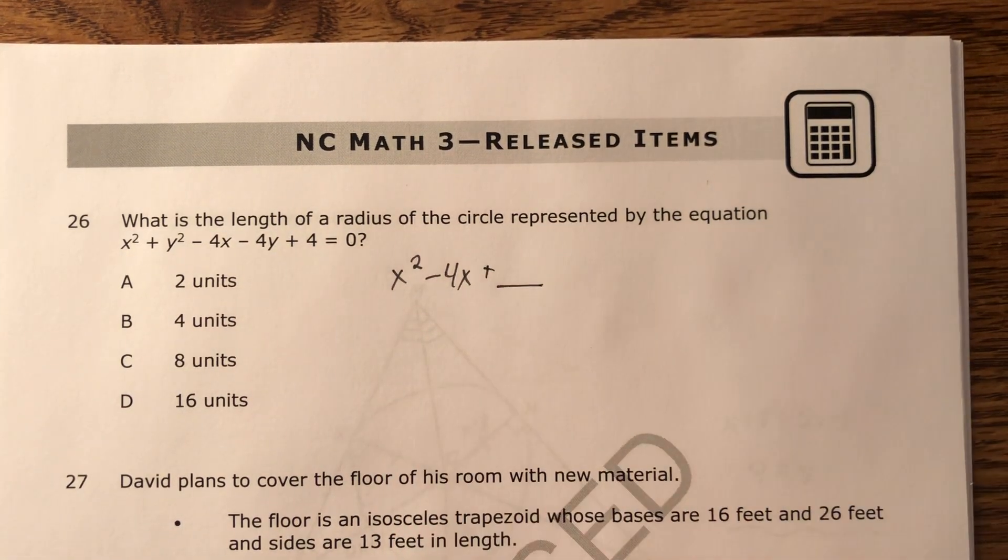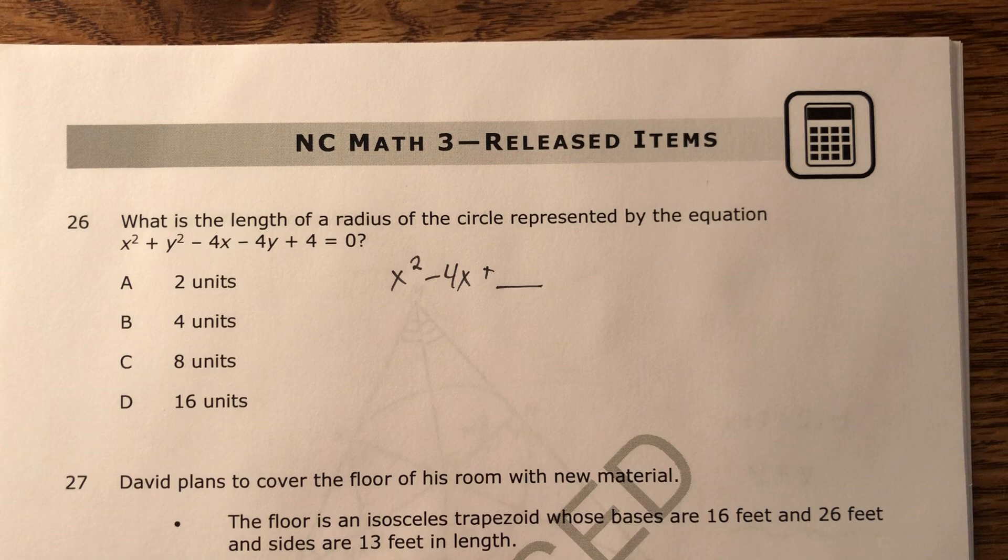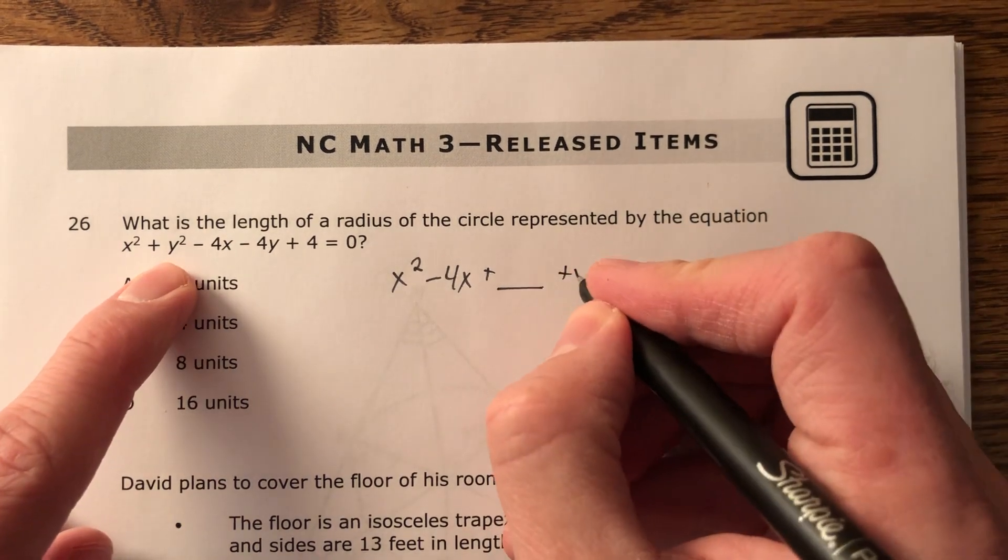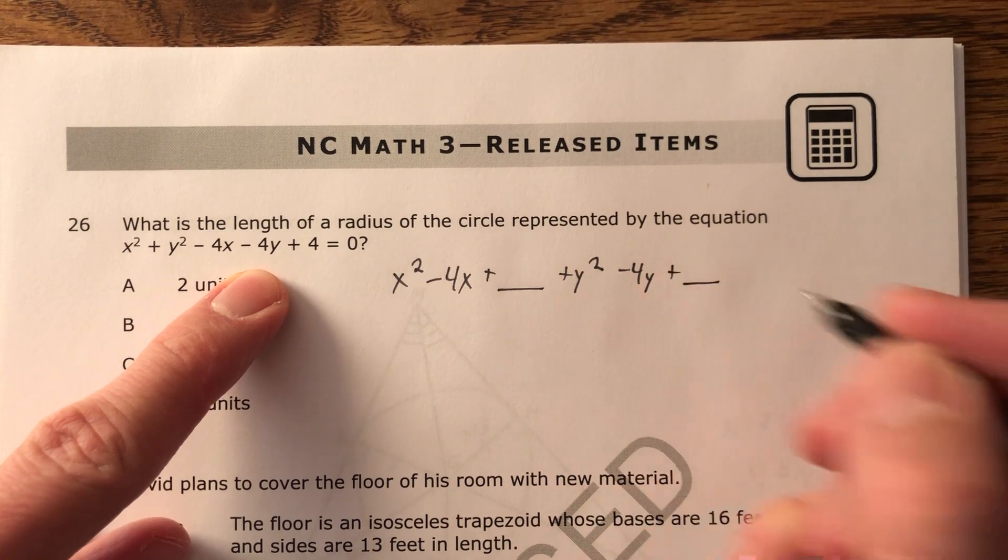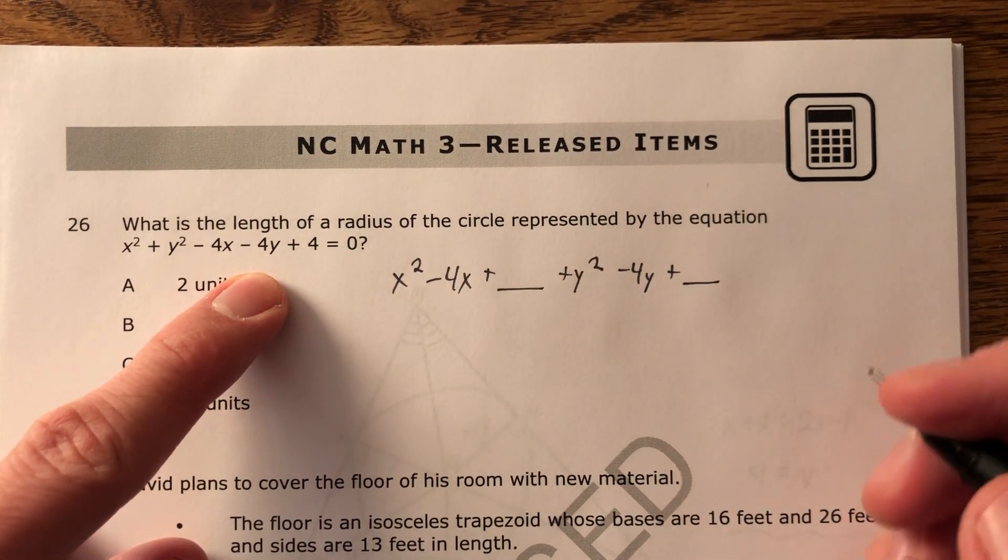And I'm going to need something to make a perfect square trinomial in a minute. And we're going to have y squared minus 4y, and that's going to have an extra term to make it a perfect square trinomial.